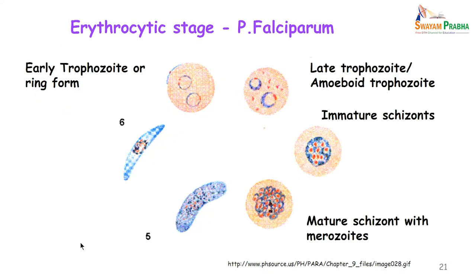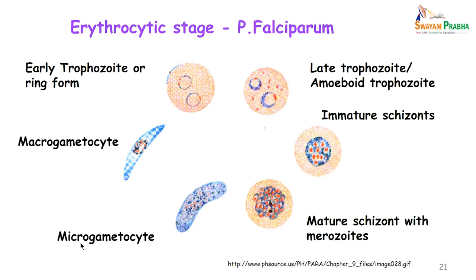This is what the gametocyte for Plasmodium falciparum looks like. The microgametocyte is a little longer than the macrogametocyte and has diffuse nuclei, while the macrogametocyte has the nuclei condensed in the centre.